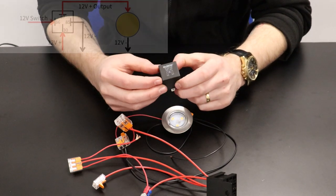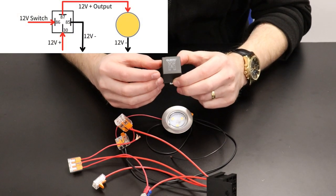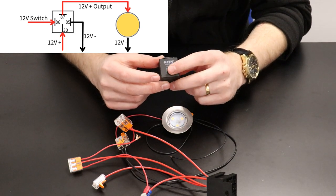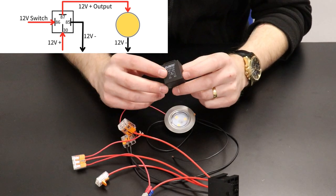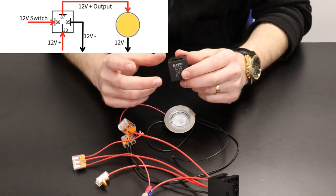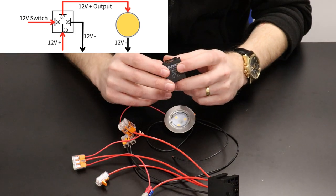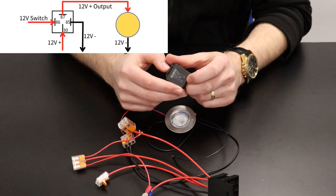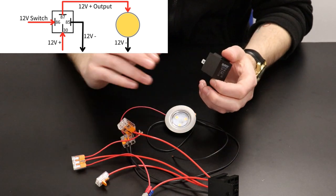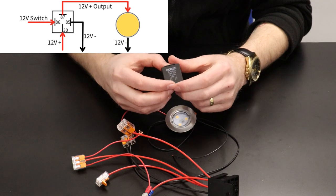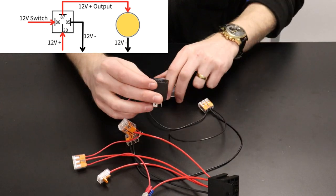To wire up the relay we've connected terminal 86 to a 12 volt feed through our switch. We've also wired up terminal 85 for our earth. Terminal 30 is our 12 volt plus feed from our battery or power supply and 87 would then go to the positive side of our load which in our case is our LED light. So I'll show you how this works in principle.